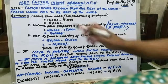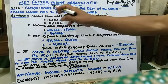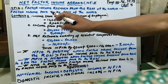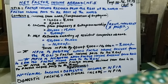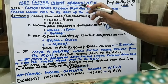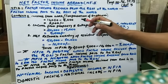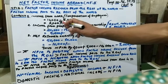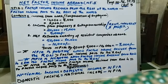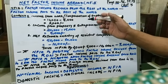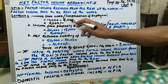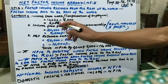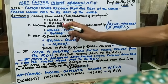There are three sources of Net Factor Income from Abroad as per your syllabus. The first one is income from work, which comes in the form of compensation of employees. Let us apply the formula: assume that an Indian doctor employed in America earned rupees 10,000 in a year — that is factor income received from the rest of the world — minus an American doctor employed in India who earned rupees 8,000 in a year. When we subtract, we get rupees 2,000. So this is your net compensation of employees from abroad.